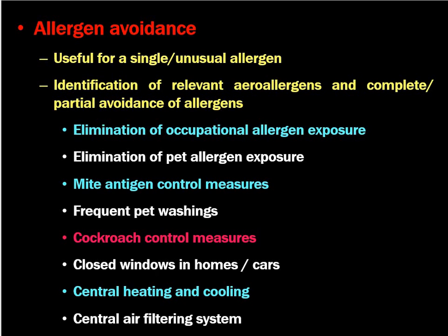Mite and dust control measures are very difficult but you have to clean the room daily along with bed sheets and linens. Frequent pet washing — if you cannot control pets coming in your house, you have to wash the pets regularly. Cockroach control measures are very important, as cockroaches are a very important cause of allergic rhinitis, especially perennial rhinitis in developed cities. Windows in the home or cars are to be kept closed so that allergens will not cause a reaction. Central heating, cooling, and air filtering systems are good for controlling allergens in the house.